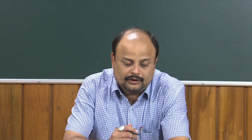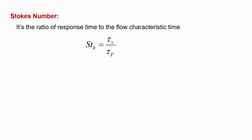With response time and stop distance defined, the third quantity is the Stokes number. The Stokes number St = τ_v/τ_f, where τ_f is the flow characteristic time. τ_f is defined as the characteristic flow length divided by the fluid velocity — for example, the length of a throat section divided by the fluid velocity through it.